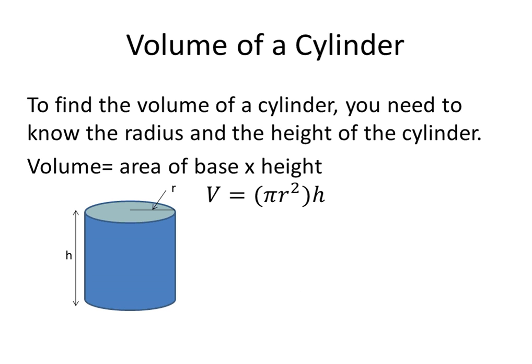The area of the base is a circle. So you do the area of a circle, which is pi r squared. So volume equals pi r squared times h, where h is the height of the cylinder.